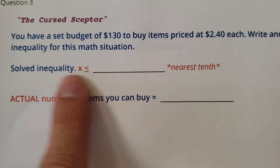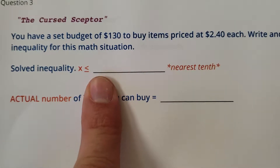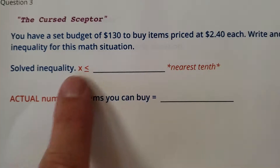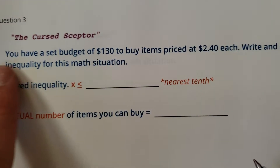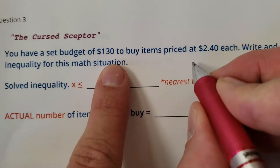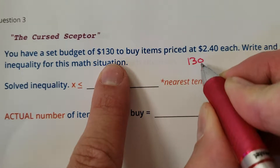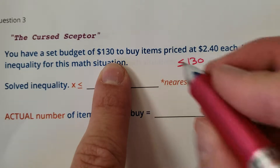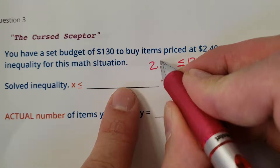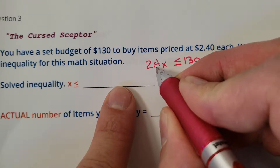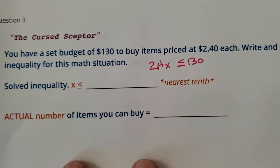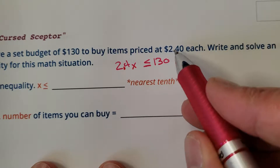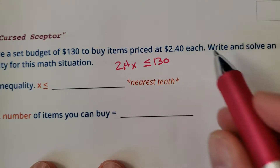The solved inequality — okay, nice. So we have to write it, solve it, and then just throw in our number right there. Hey, look at that, it's already kind of set up for us. Isn't that nice? So the setup is going to be the budget. We have a budget of $130, so we have to spend less than or equal to $130. And it's $2.40 per item — I'm going to use x. x is the most famous variable. Each, for every, per — that usually means multiplication.